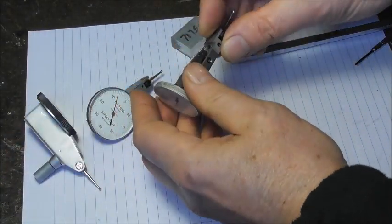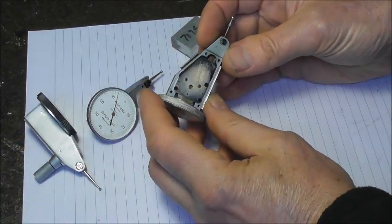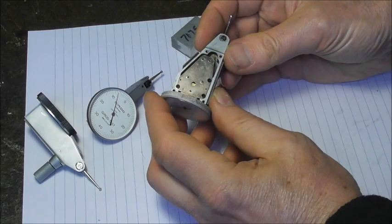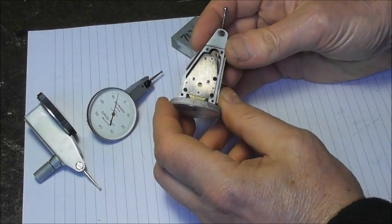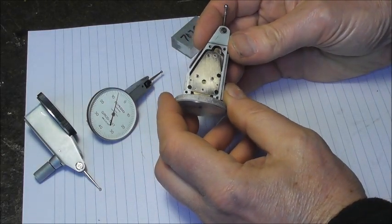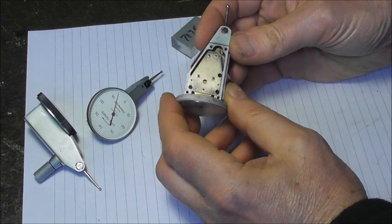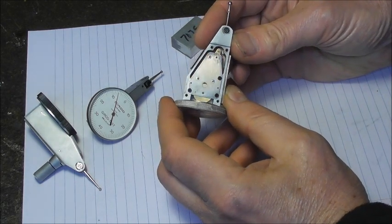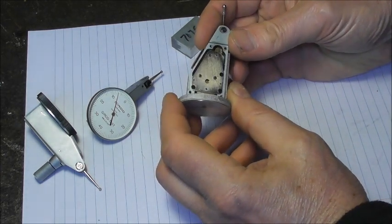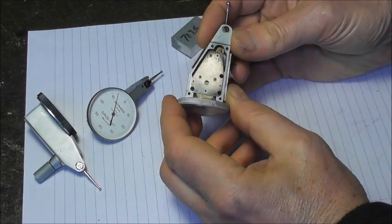So I just pulled the side cover off the Mitutoyo. And while I've got my eye in, had a bit of a look at that. And it's nicely made. It's perhaps not quite to the same class as the Swiss dial indicator, but it does have some dual bearings.